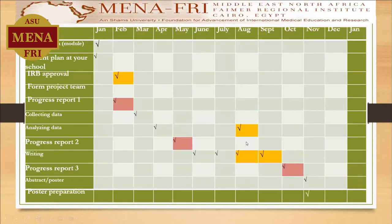Changes made include: IRB approval was moved to February, and data analysis may be moved to August under some circumstances. Writing will require more time, extending into September, inshallah. Those are the changes I have made.